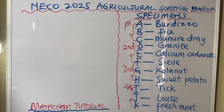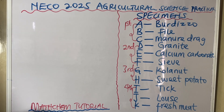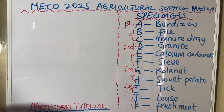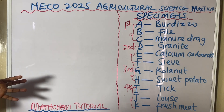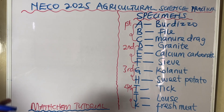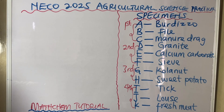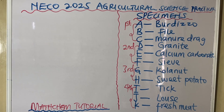Specimen C is a manure drag. Picture it like a rake — it looks similar to a rake. They use it to spread out manure on the farmland. The manure drag comes in two types: one is attached to a tractor, which spreads manure across the farmland as the tractor moves. The one presented in the exam looks like a rake used to spread or gather manure.